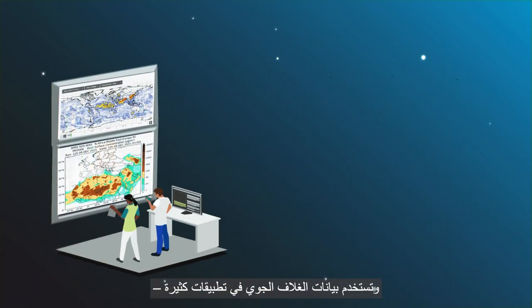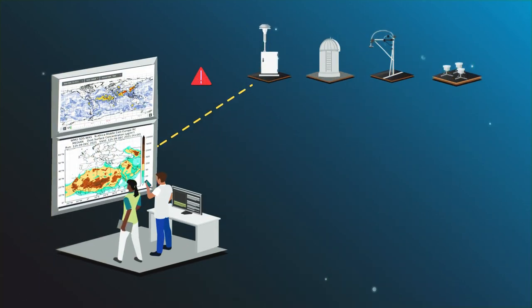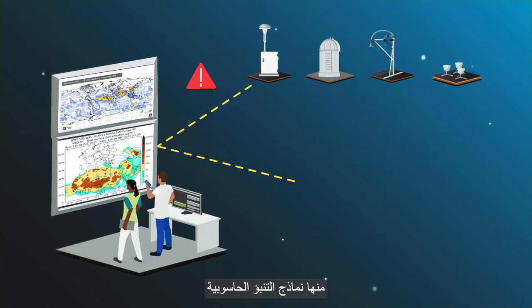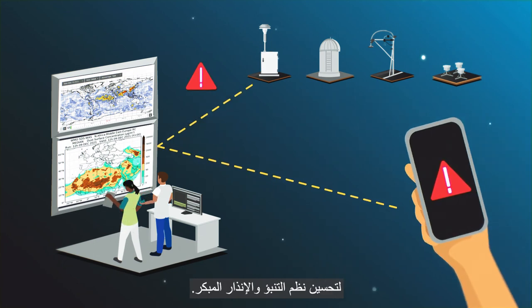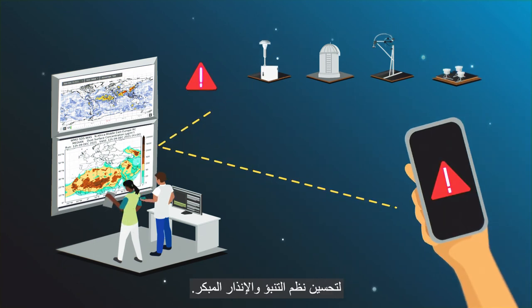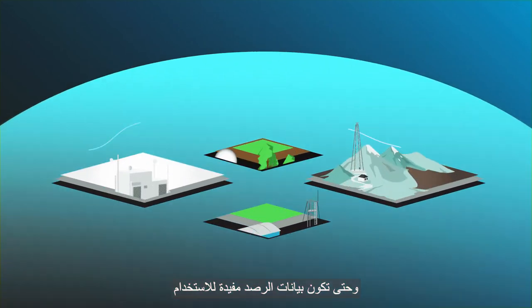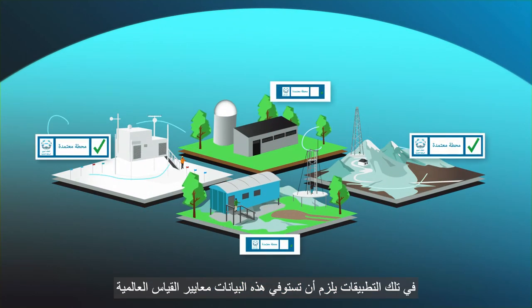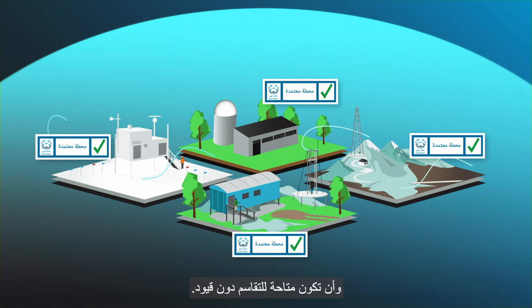Atmospheric composition data are used in many applications, including computer prediction models, to improve forecasting and early warning systems. To be useful in such applications, observational data have to meet international measurement standards and to be openly shared.